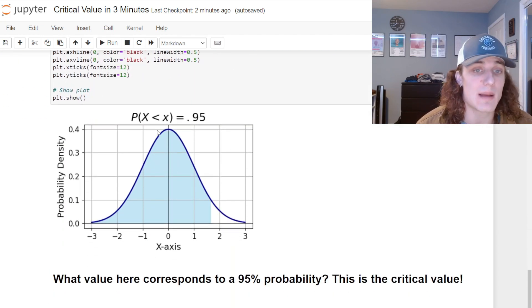So if we take a look at this, the probability that the random variable X is less than or equal to little x is going to be 95%. That's going to be integrating from negative infinity all the way up to this value.